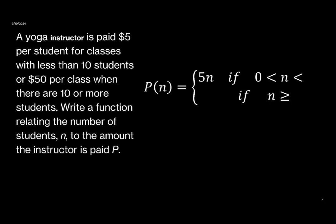We have a condition here that this is only true when we have up to 10 students, so we want to put a 10 on our inequality. This says when we have from 0 to 10 students, the instructor gets $5 per student.